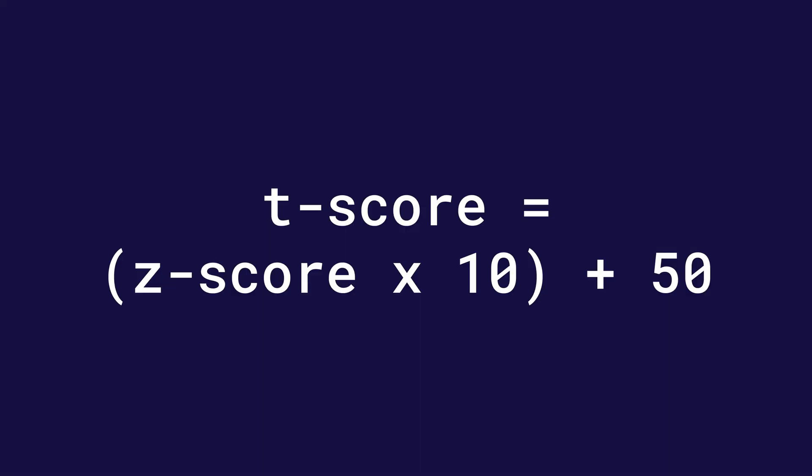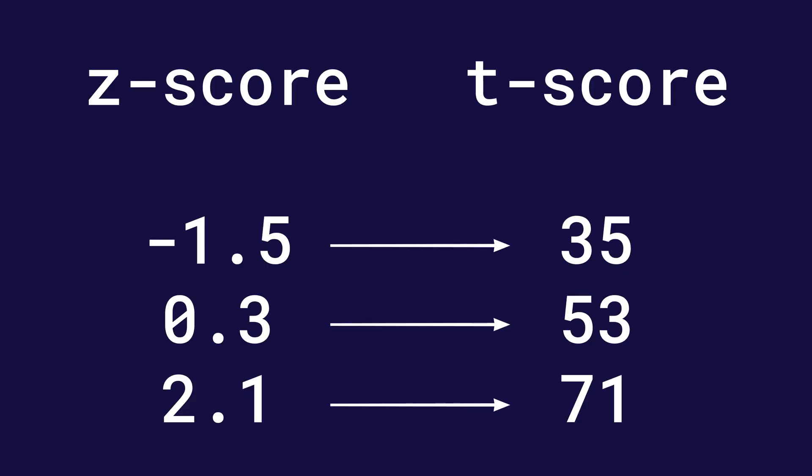A similar but slightly different alternative is to calculate a T score. The T score gives you a number between 0 and 100, but in reality it's most frequently between 20 and 80, with a Z score of 0 — an average score — corresponding to the number 50 for a T score. We calculate this by taking the Z score, multiplying it by 10, and then adding 50. Let's look at some examples using the same Z scores we used in the STEN example.